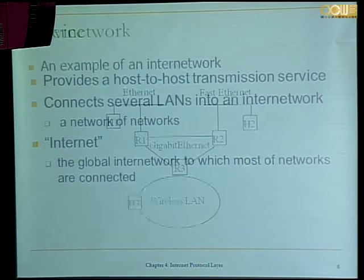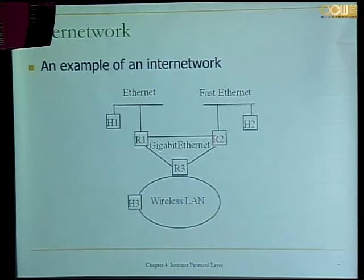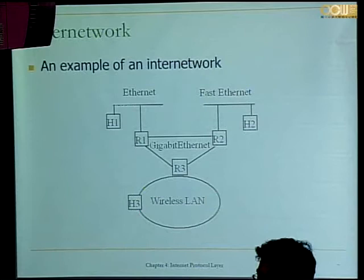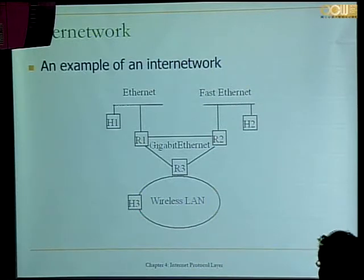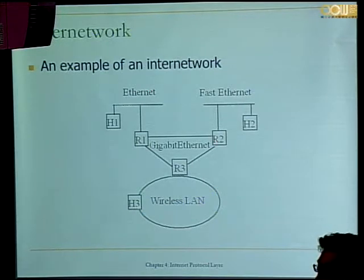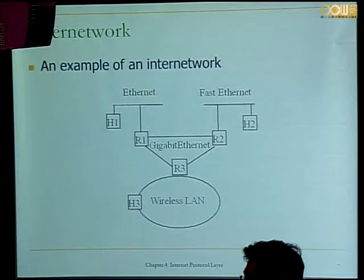Here's an example of an internet network. Within this network you have three LANs — two Ethernet and one wireless LAN. So you have three links, and all the links are broadcast links or point-to-point links. They each form a broadcast domain, giving you three broadcast domains, interconnected by three routers.